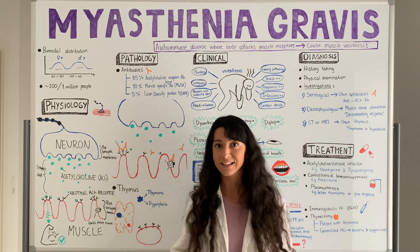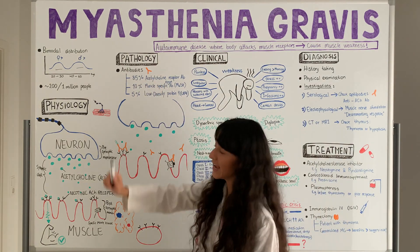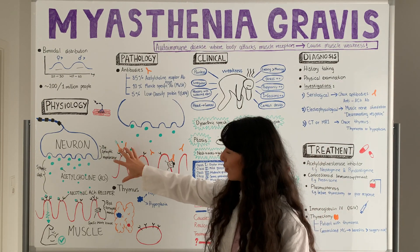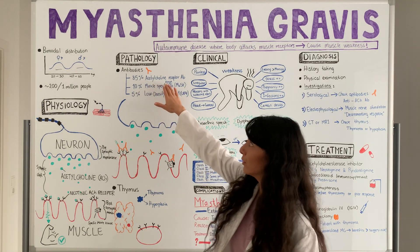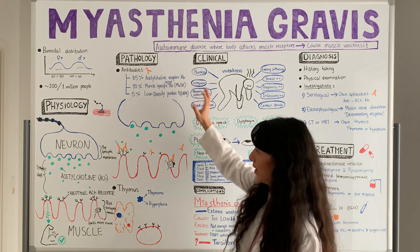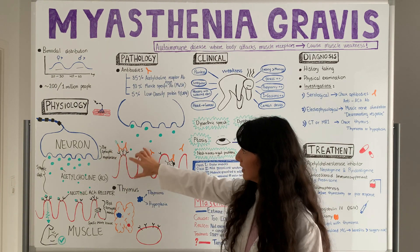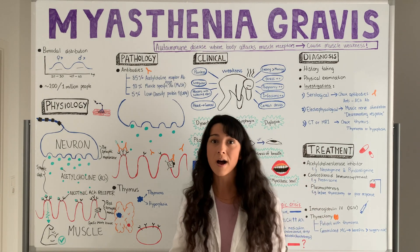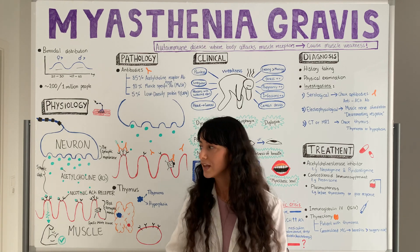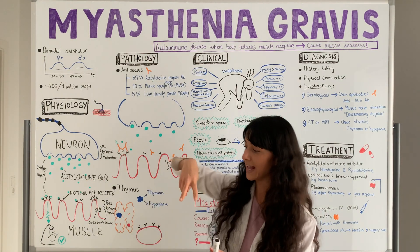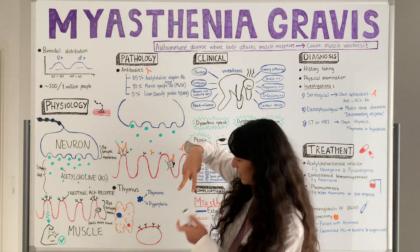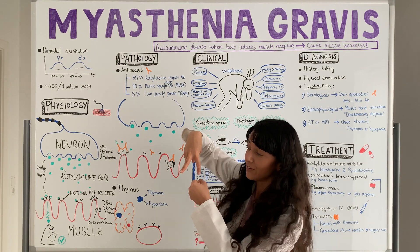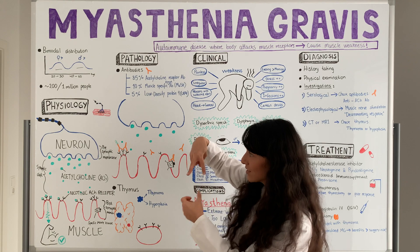Now let's get into what exactly these antibodies are doing. I want you to focus on the acetylcholine receptor antibodies first. The antibodies come and bind to receptors in a process called cross-linkage. Imagine the antibody has two legs — it puts one leg into one receptor and the other leg into another receptor. That's cross-linkage.